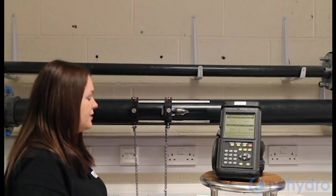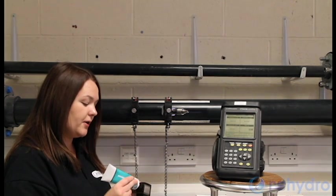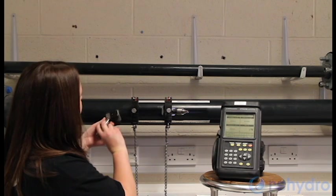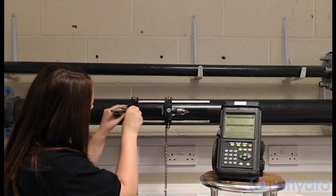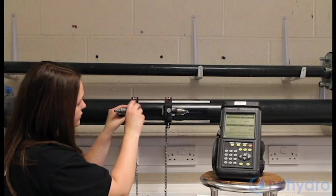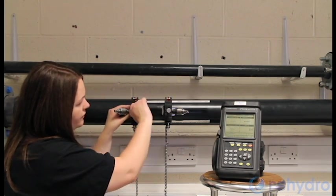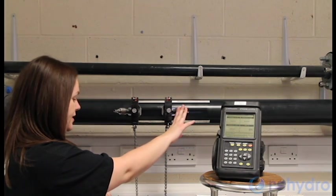Now take the transducers and put a small amount of couplant onto them, then screw them into the clamping fixture. You'll see I've already screwed the second transducer in.